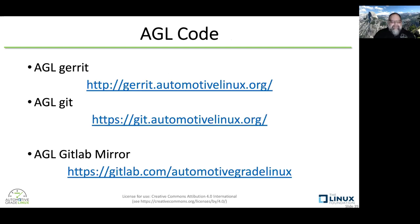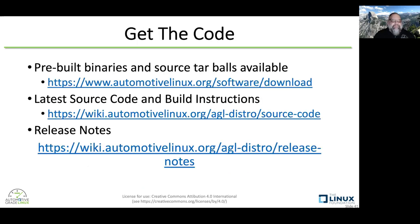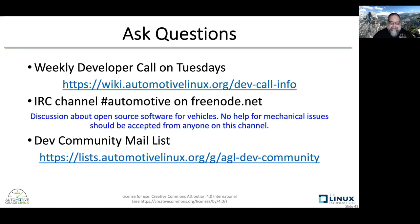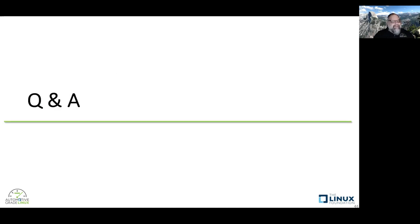Some links you can get from the slides after you download them: getting started documentation, our wiki page. We use Jira for project management. We have pre-built binaries. Release notes are all available on the wiki page. We have a weekly developer call on Tuesdays — you can join and ask me anything. I'll try to answer, or I usually have somebody smarter than me to answer the questions. We're on IRC and we have a really good mailing list. You can also connect to AGL on social media via Twitter, Facebook, or LinkedIn. With that, thank you very much.